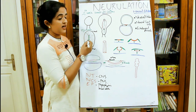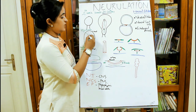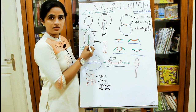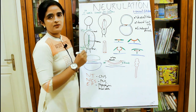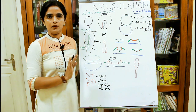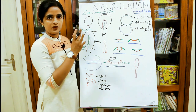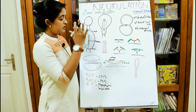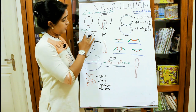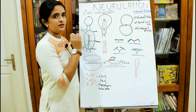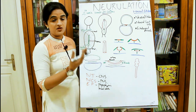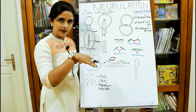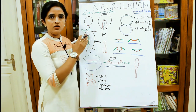At the caudal region, there is primitive streak formation with Hensen's node, which gives rise to the intra-embryonic mesoderm. In the middle you can see a rod-like structure — our notochord — extending from Hensen's node at the caudal end to the buccopharyngeal membrane at the cranial end. The notochord lies between the ectoderm and endoderm, and it is visible through the ectoderm.